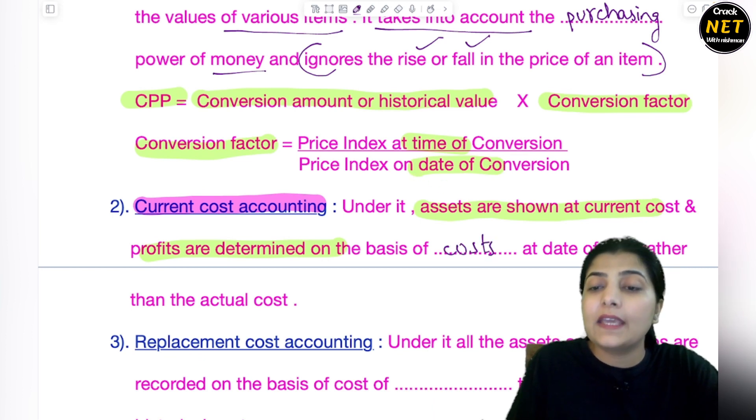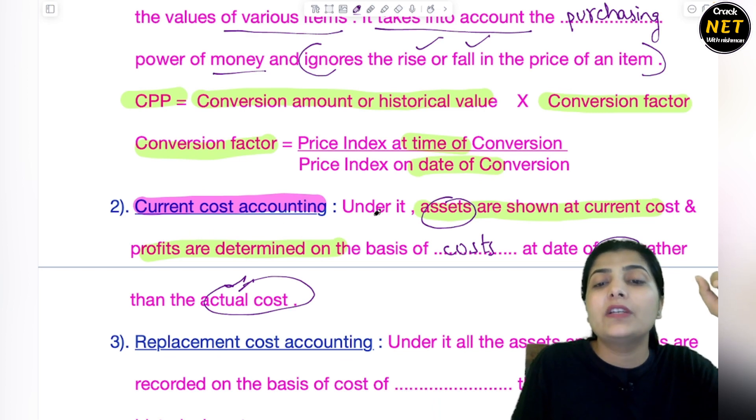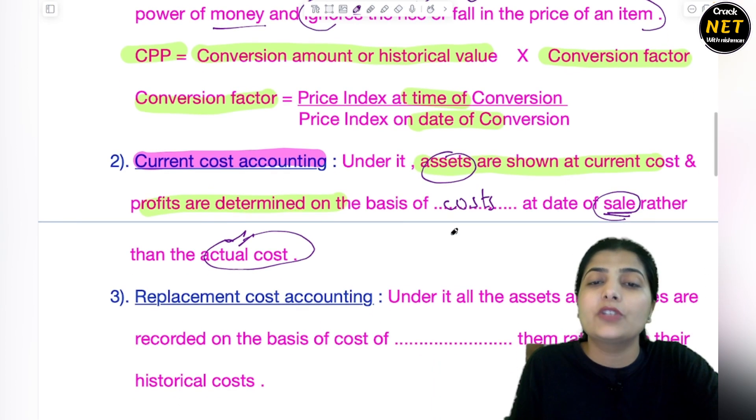And profits are determined on the basis of their cost at the date of sale rather than actual cost. The value of assets is not taken as actual cost, but on the day of their sale, whatever profits are determined, that cost you take.